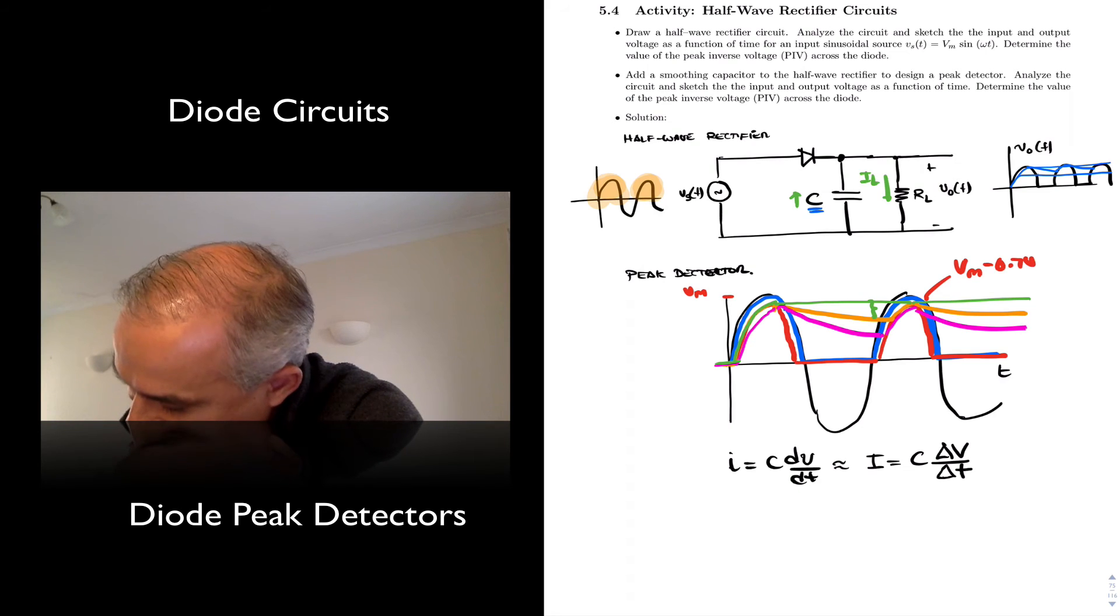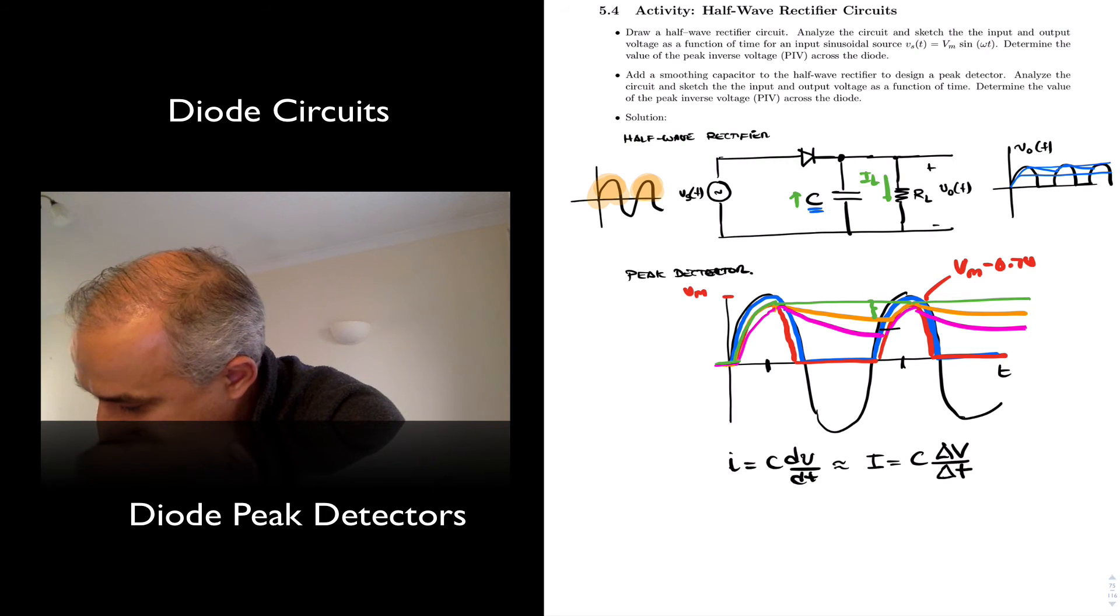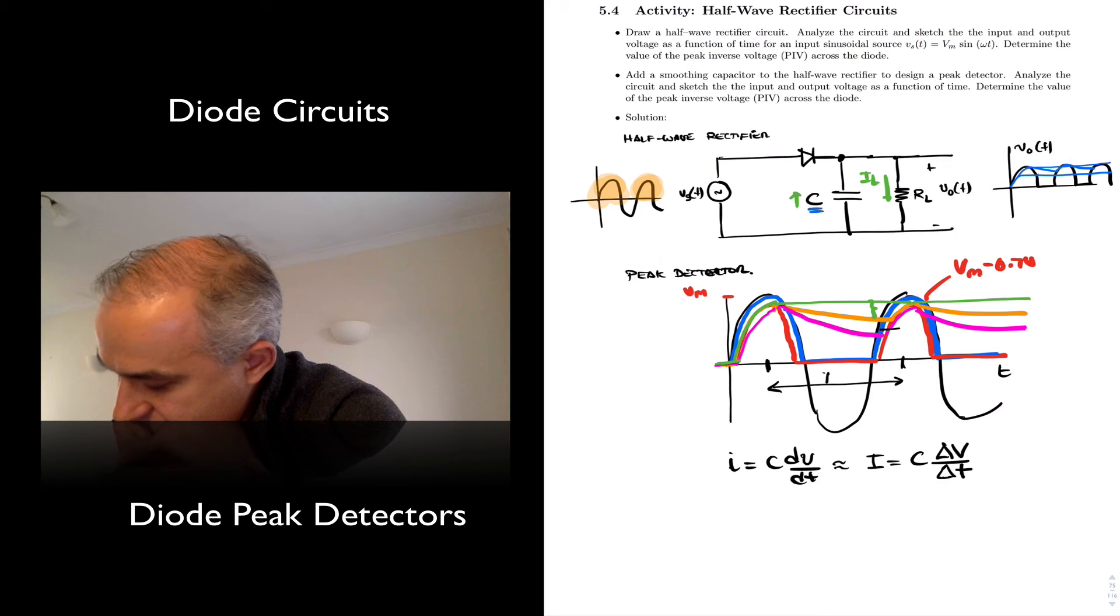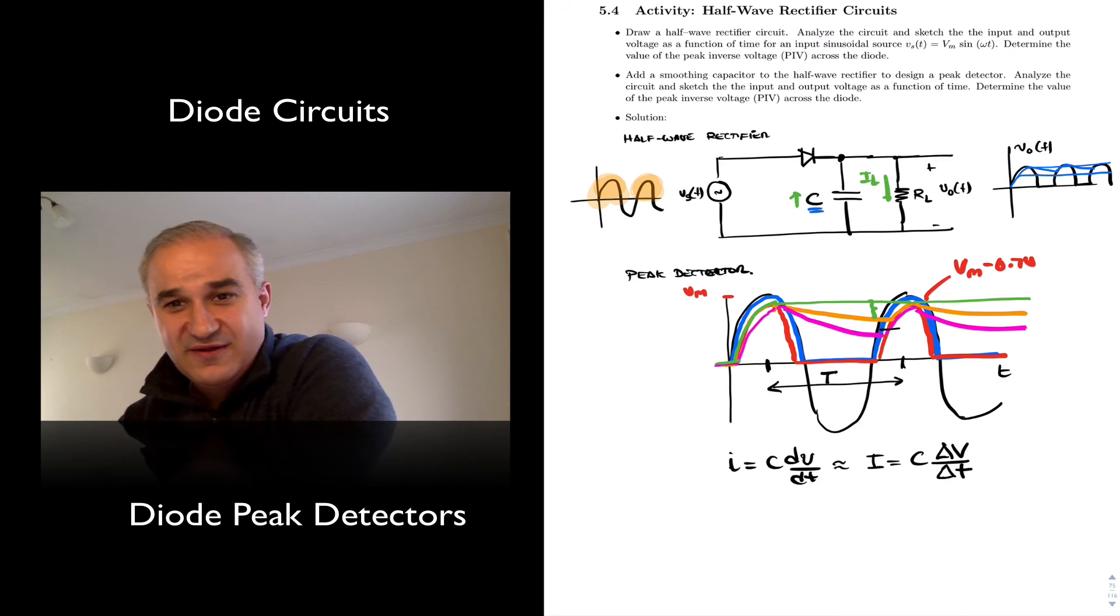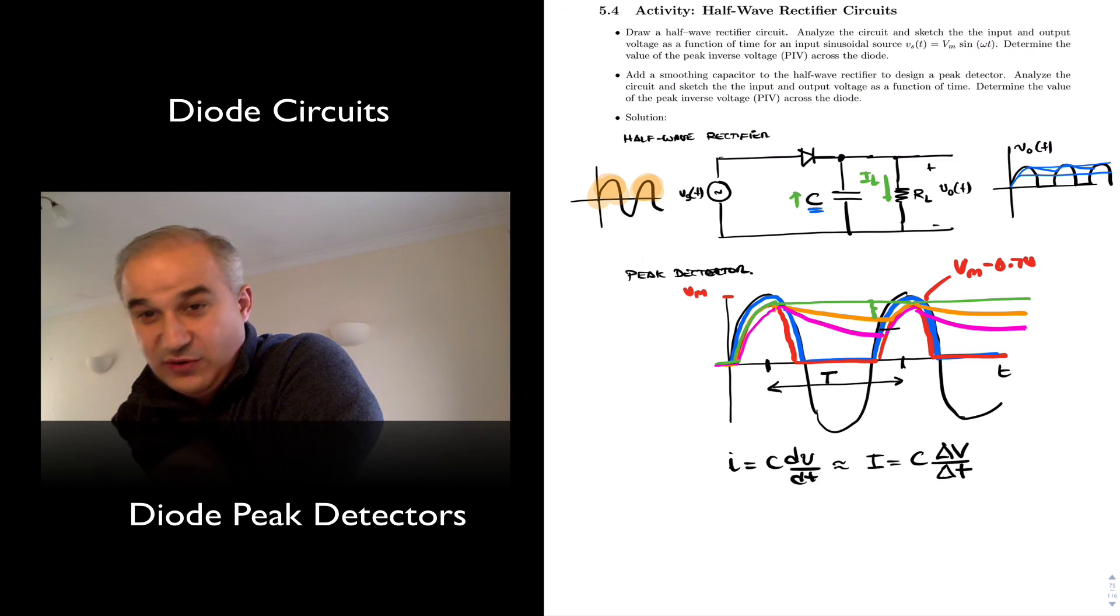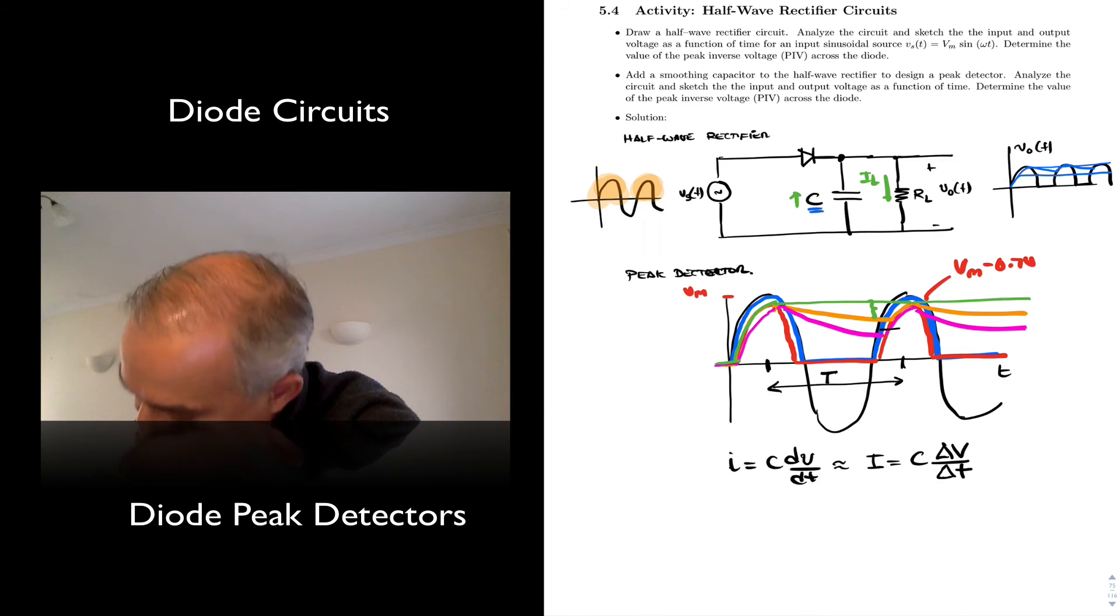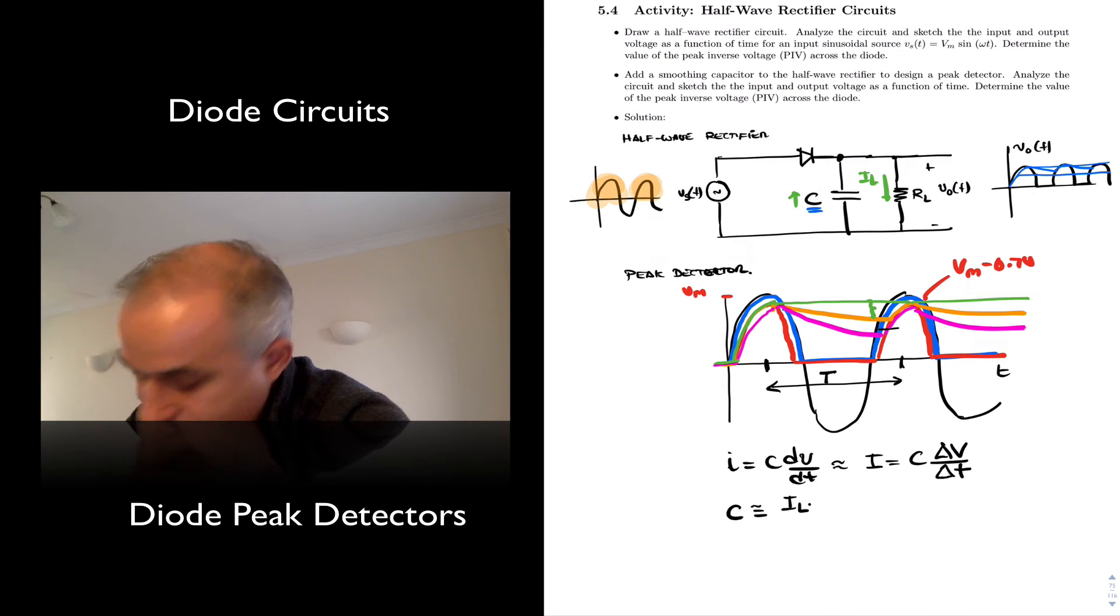Or we can see that in this case, the time is from here to here, approximately. It's not exactly, it's a little bit less. But we could say, okay, this is approximately this. Notice that in a half-wave rectifier, the frequency of the output is the same as the frequency of the input. And so we could say, well, in my capacitor I can select it as approximately, and this will be a conservative design, so it's good, if a load current times this time period.